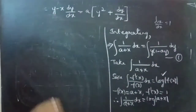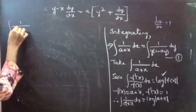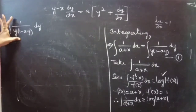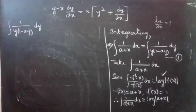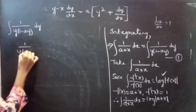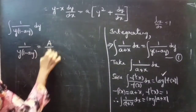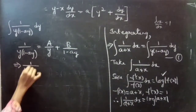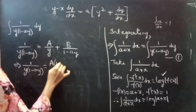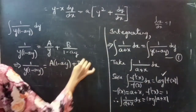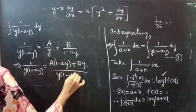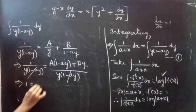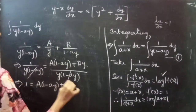Now consider the RHS: integral of 1/(y into (1 minus ay)) dy. Since this is a fraction, we resolve it into partial fractions. We write 1/(y(1 minus ay)) as A/y plus B/(1 minus ay). This gives 1 equals A into (1 minus ay) plus B into y, after cancelling y(1 minus ay) from both sides.